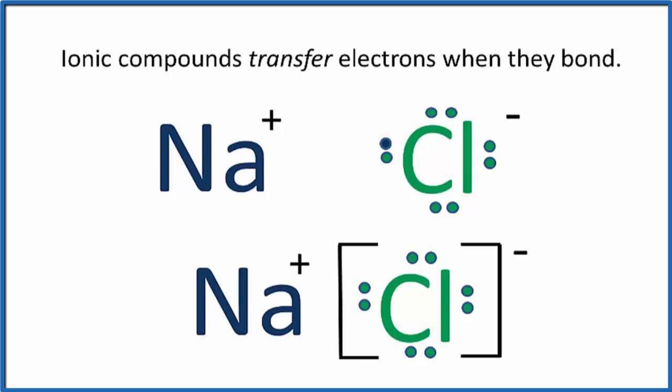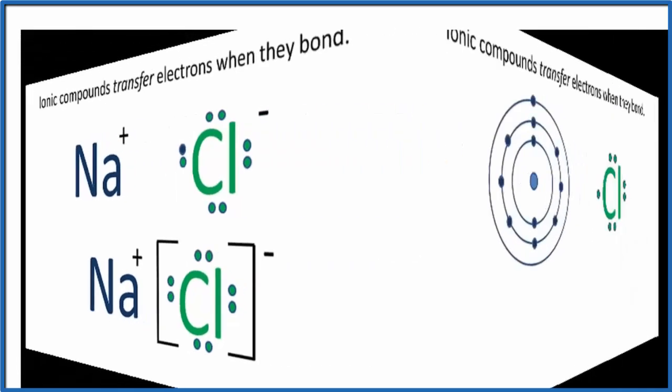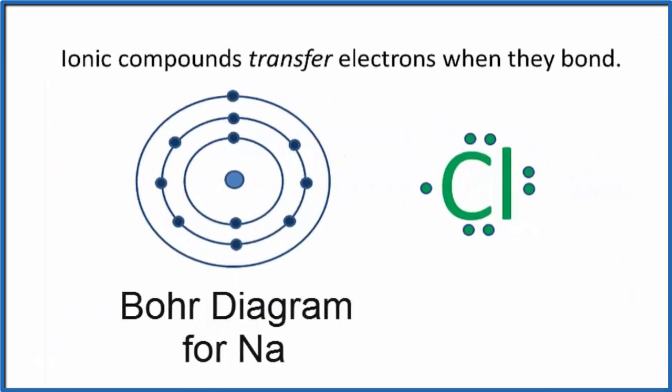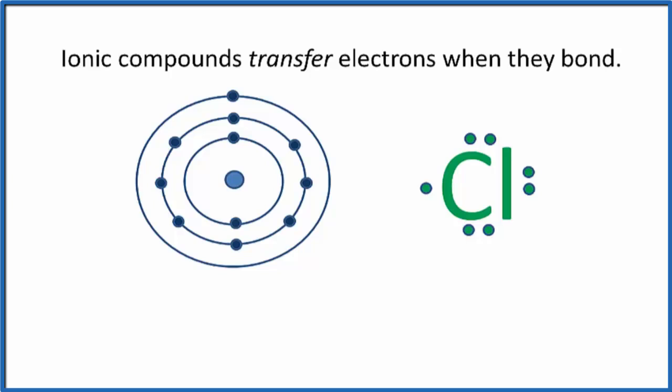The chlorine has an octet, but what about the sodium? We can write a simple Bohr diagram to show the electrons and how they're distributed around the nucleus of the sodium atom. Sodium has 11 electrons, but only one of them is in the outer shell, and that's the one that we transferred to chlorine.